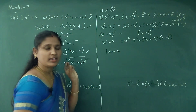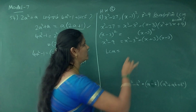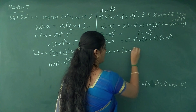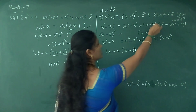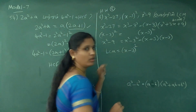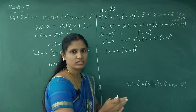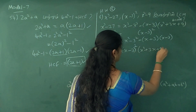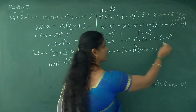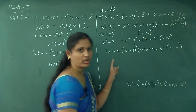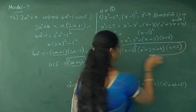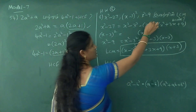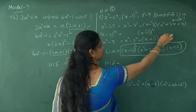LCM. LCM is the product of all factors. We have x minus 3 appearing multiple times. Looking at all the factors: x minus 3, x squared plus 3x plus 9, and x plus 3. The HCF highlights x minus 3 as common. With x minus 3 the whole square, the power is noted, so LCM takes the highest power.